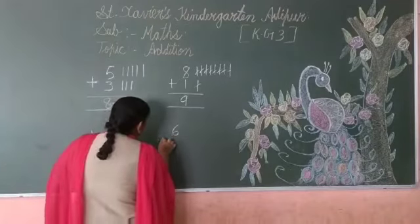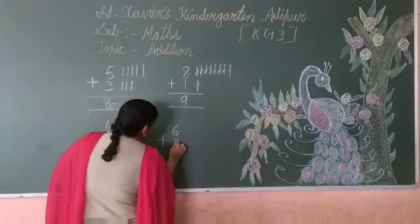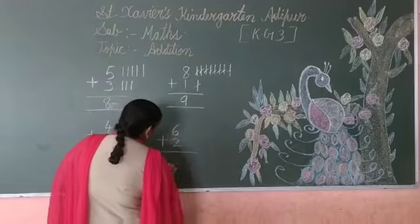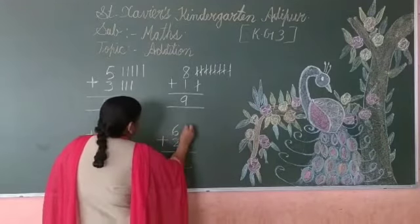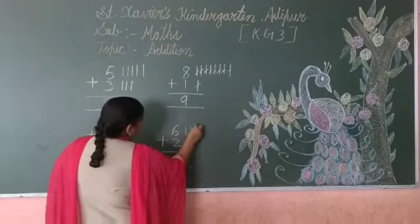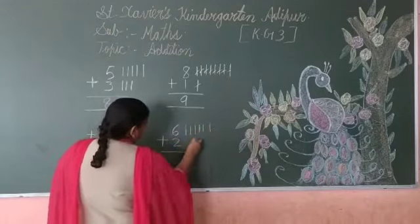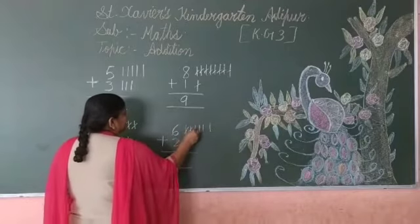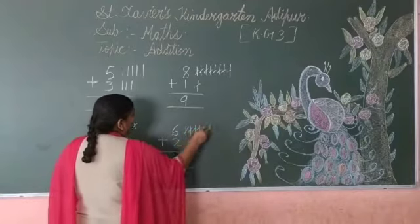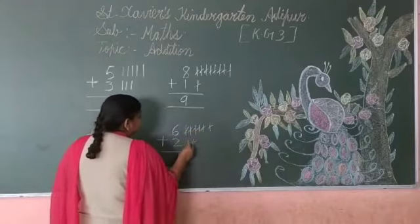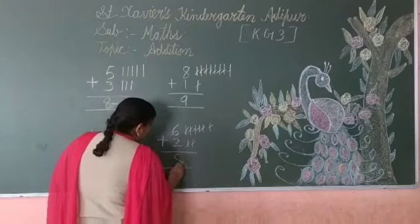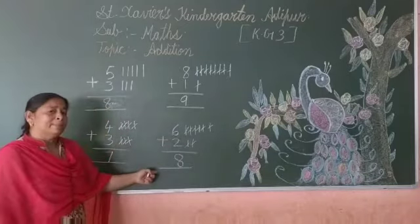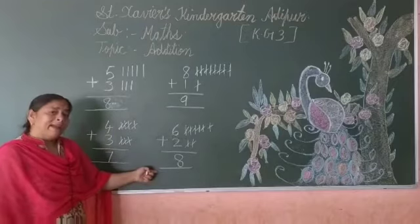6 plus 2. Draw 6 lines: 1, 2, 3, 4, 5, 6. And 2 lines: 1, 2. Now count all together: 1, 2, 3, 4, 5, 6, 7, 8. Number 8. So 6 plus 2 equals 8.